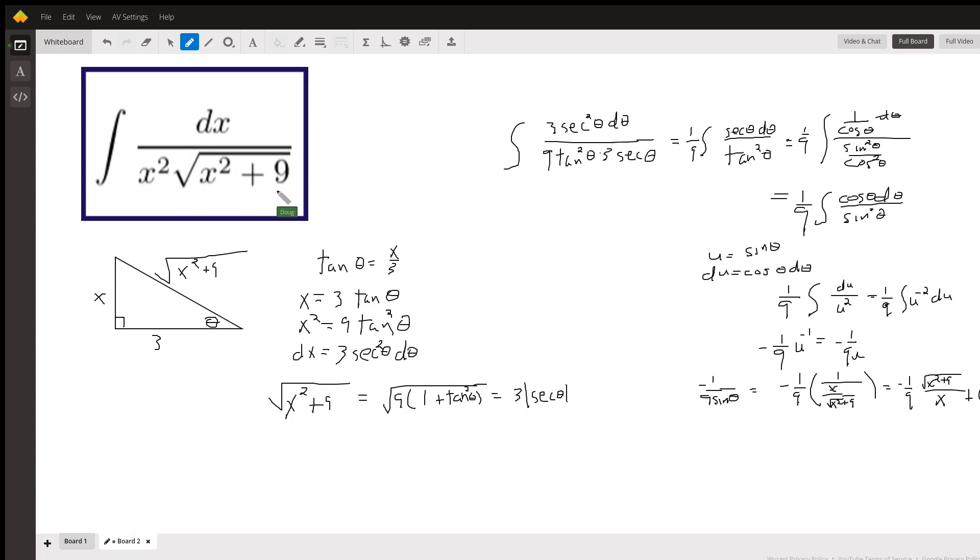So I visualize this with a little right triangle. X squared plus 9 means the X and 3 are legs of the right triangle. When you use trig substitution, I like to remember the mnemonic SST. It's either you're looking for sine, secant, or tangent.